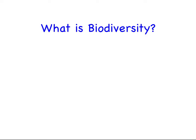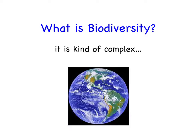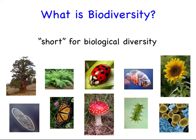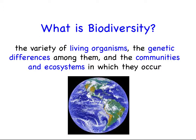First, what is biodiversity? Well, it's kind of complicated. Biodiversity is short for biological diversity. It concerns the types and varieties of biological systems, from the trees, ladybugs, and algae, to the sunflowers, butterflies, and paramecia. A more formal definition: it's the variety of living organisms, the genetic differences among them, and the communities and ecosystems in which they occur.